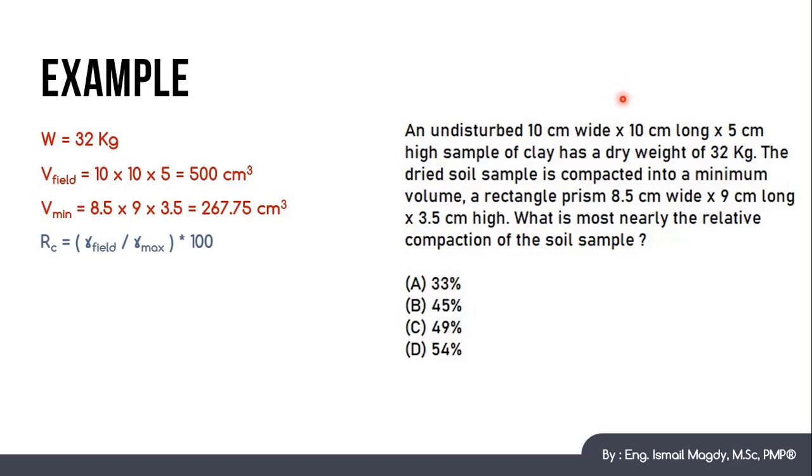And we know that RC, which is the relative compaction, it equals gamma field over gamma maximum, all multiplied by 100. And we know that the gamma field equals weight over the volume of the field. So it will be 32 over 500, which is 0.064 kg per cm cube. And we will do the same to calculate the V maximum, which is the weight over V minimum. So it will be 32 over 267.75, which will equal 0.11 kg per cm cube.